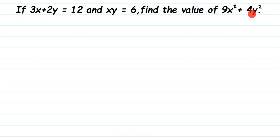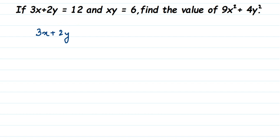We have been given the value of 3x plus 2y and we have to find the value of 9x squared plus 4y squared. We have squares in the target expression but not in the given value, so to get the squares we are going to do squaring on both sides of the equation. So 3x plus 2y whole squared is equal to 12 squared.